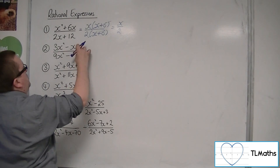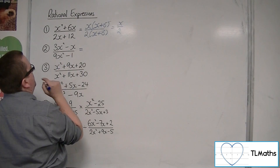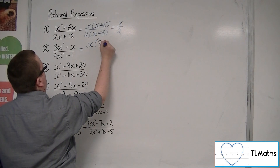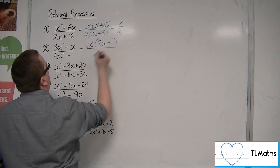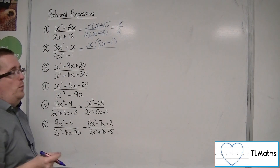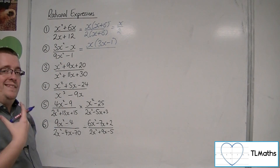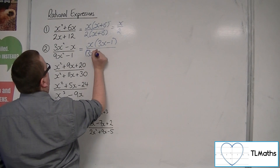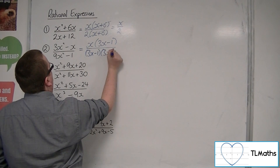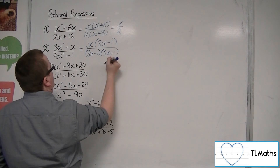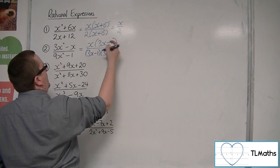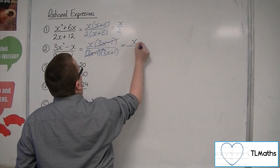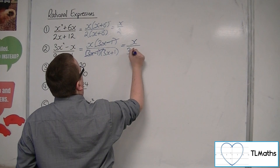For number two, I'm going to do a similar idea. Bring the x out of the numerator to have 3x minus 1. Now the denominator, 9x squared minus 1, is the difference of two squares, so that could be written as 3x minus 1 times 3x plus 1. So we have a common factor in the numerator and denominator, and we're left with x over 3x plus 1.